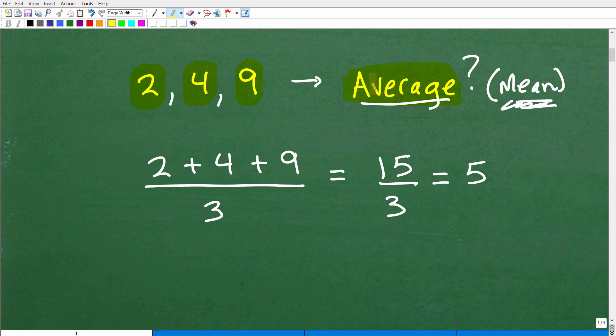But anyways, when we're finding the average or the mean, what we're going to do is add up the numbers. So in this case, it's going to be 2 plus 4 plus 9. And then how many numbers do we have here? We have one, two, three. So we're going to divide by the number of numbers that we have. So we're going to add up the numbers and we're going to divide by 3 because we have three numbers. So 2 plus 4, that's 6 plus 9. That's 15. 15 divided by 3 is 5. So the average of these three numbers is 5.